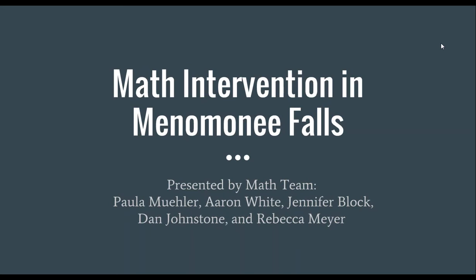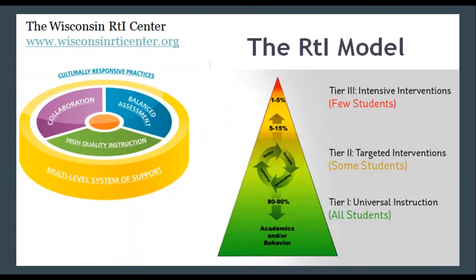My name's Erin White. I'm here with Becky Meyer and Paula Mueller — three members of the math team in Menominee Falls. To get us started, a quick look at the multi-level system of support, which includes high-quality instruction, collaboration, balanced assessment, and culturally responsive practices. This has helped drive our decisions as a district and team. The RTI model ranges from Tier 1, where 80 to 90% of students exist, to Tier 2 with targeted interventions for 5 to 15%, and then Tier 3 intensive interventions designed for few students — the 1 to 5% — which make up the large portion of students that we work with.